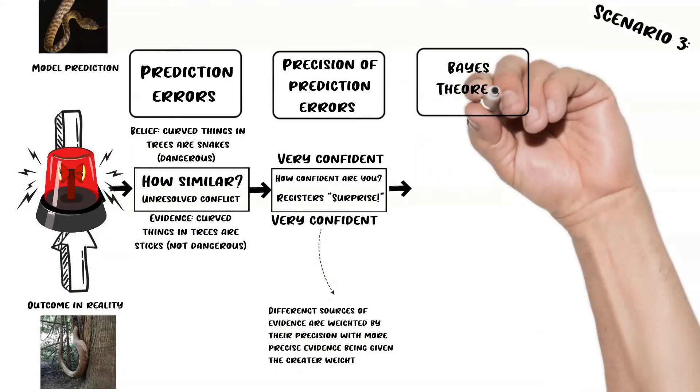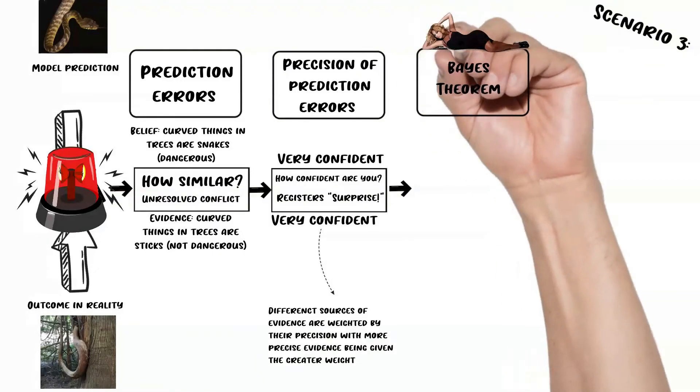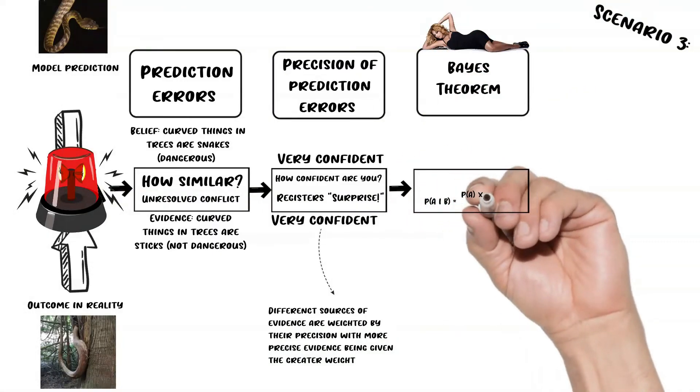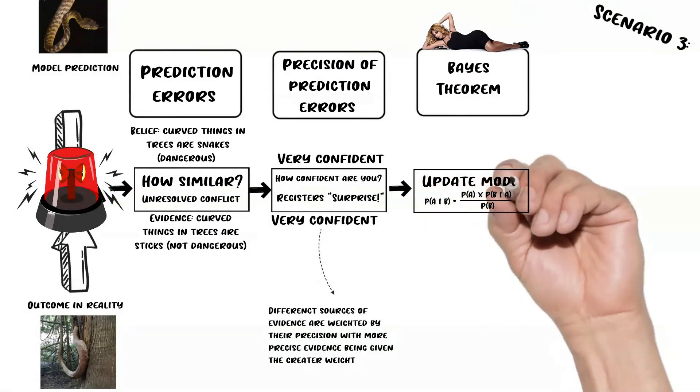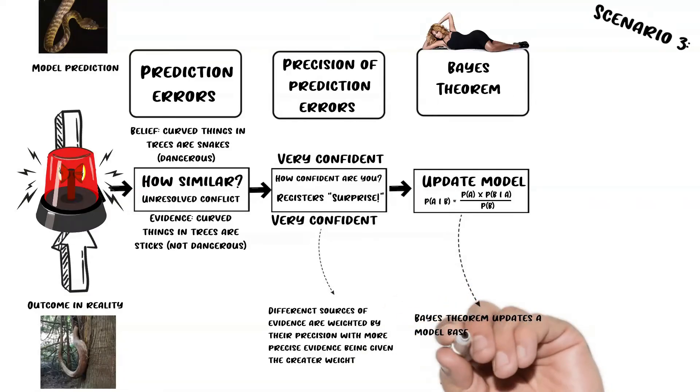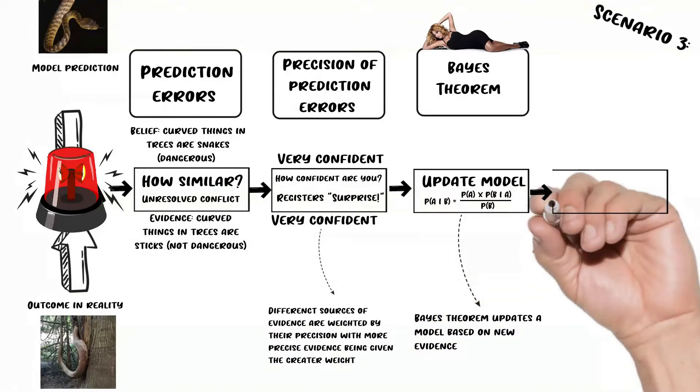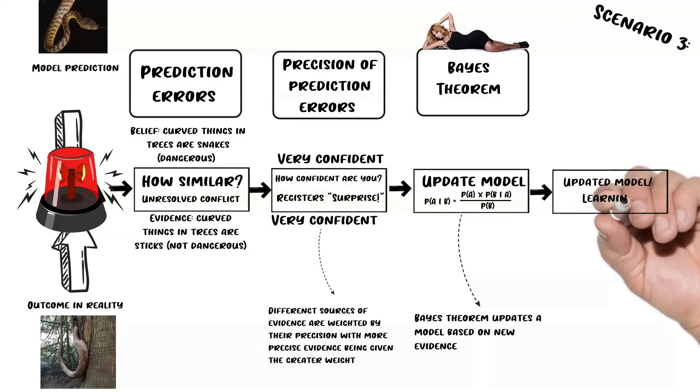I don't want you to get too wrapped up in Bayes' theorem because I don't want it to get more confusing than it needs to be, but it's basically a way to update a model based on new evidence. For here, basically what it's doing is updating our model which says that curved things in trees are snakes and are dangerous, and it's adding this new data that we came across a curved thing in a tree that wasn't dangerous.